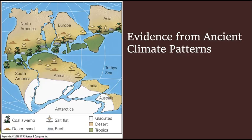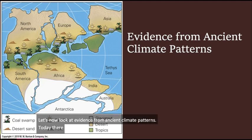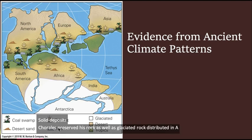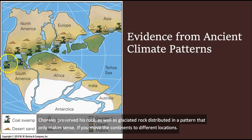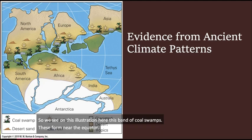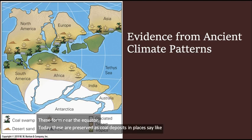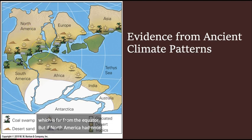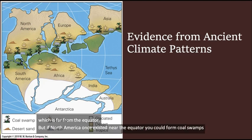Let's now look at evidence from ancient climate patterns. So we see on this illustration here, this band of coal swamps. These form near the equator. Today, these are preserved as coal deposits in places like eastern North America, which is far from the equator. But if North America had once existed near the equator, you could form coal swamps that became the coal deposits that I just referred to.